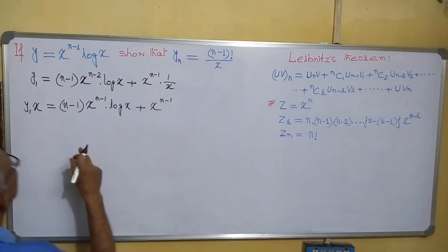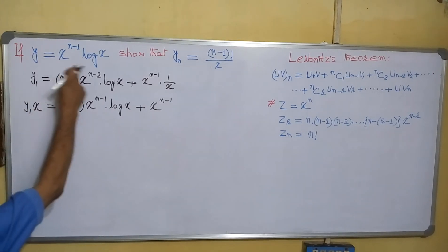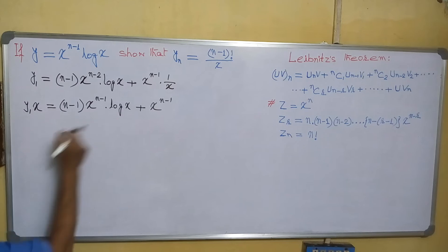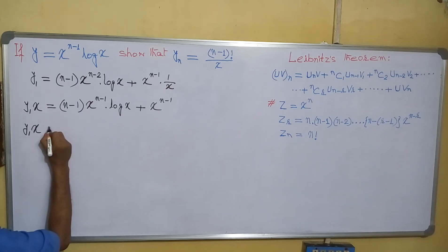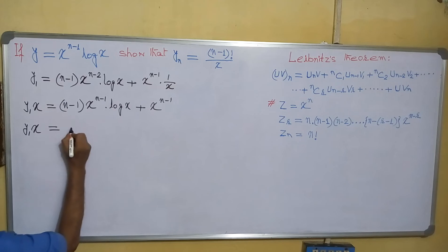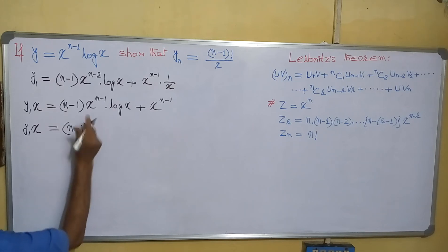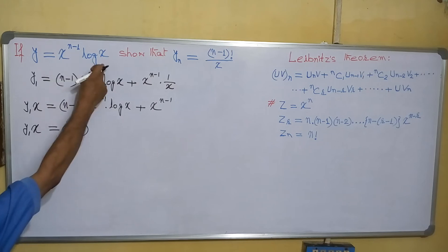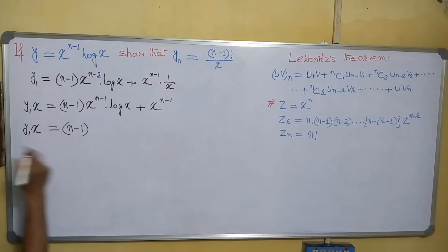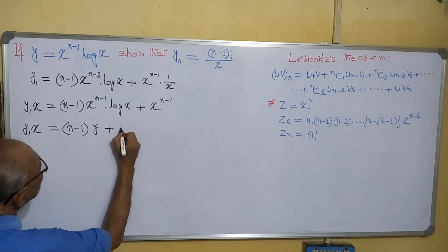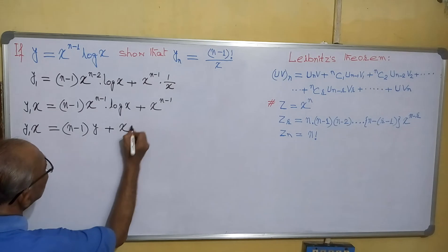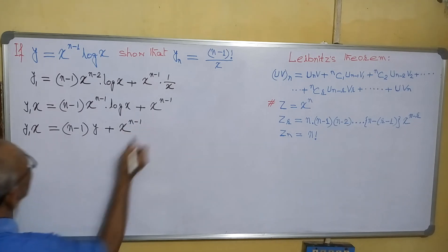Now, y equals x to the power n minus 1 into log x. So we will write y₁·x equals n minus 1 into x to the power n minus 1 into log x — instead of that we will write y — plus x to the power n minus 1.